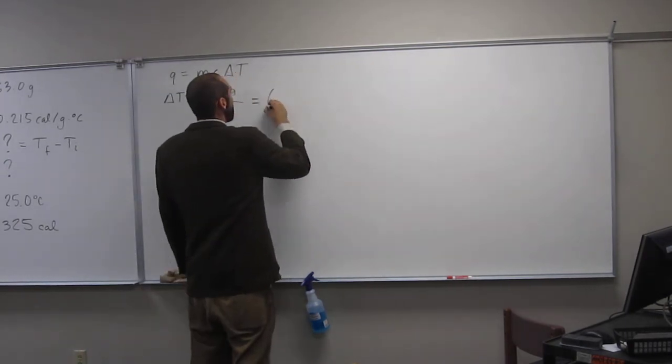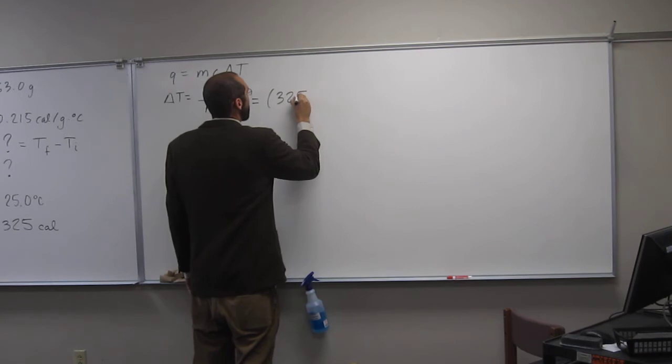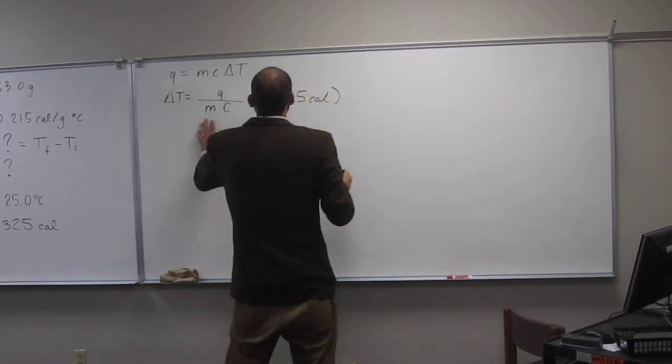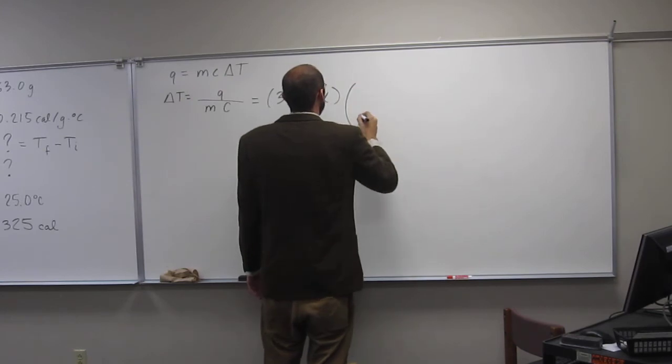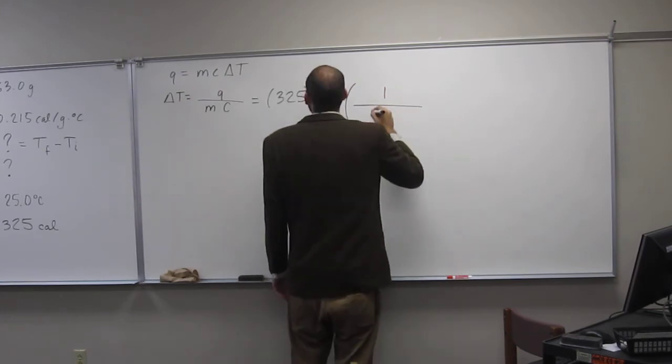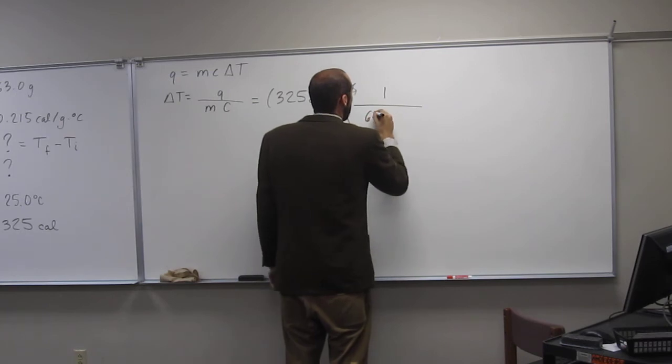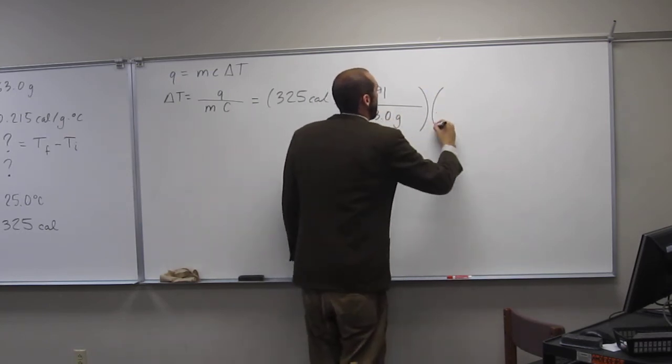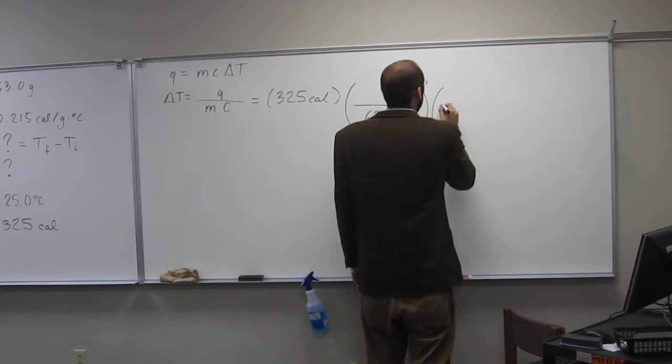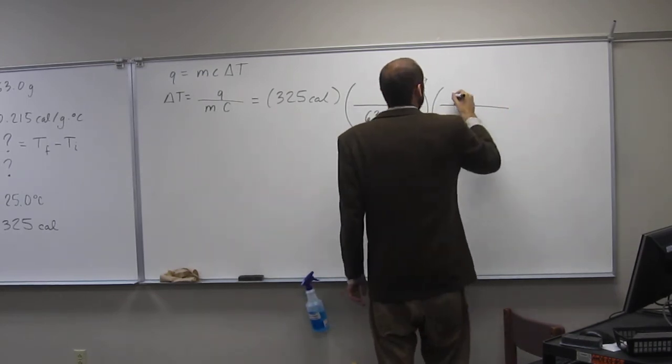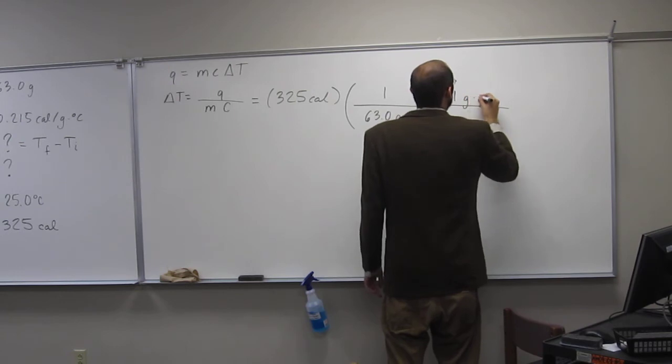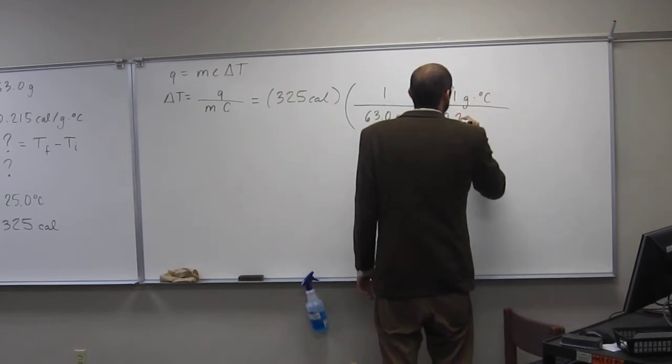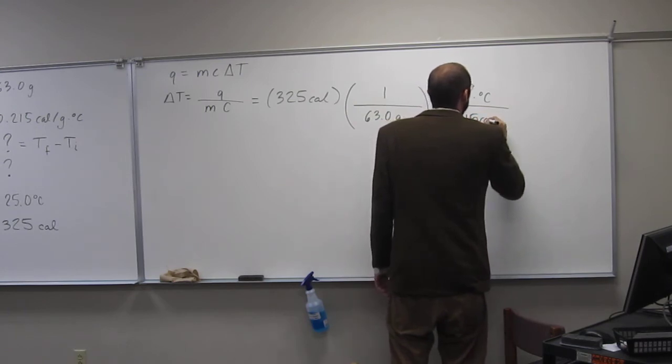So, Q is 325 calories times 1 over M, which is 1 divided by 63.0 grams. 1 over C, so in that case, it's going to be 1 gram degree Celsius per 0.215 calories.